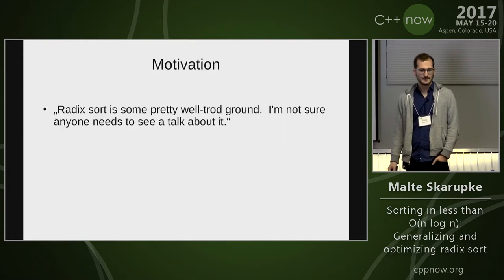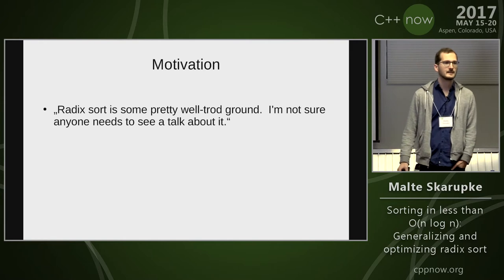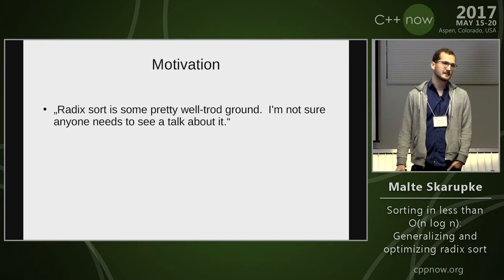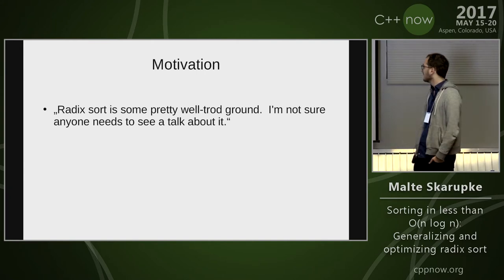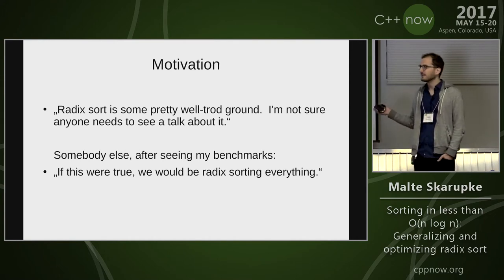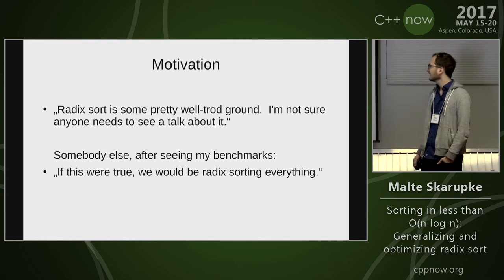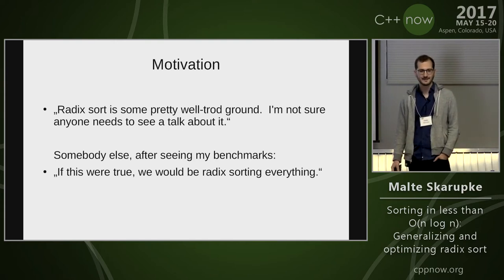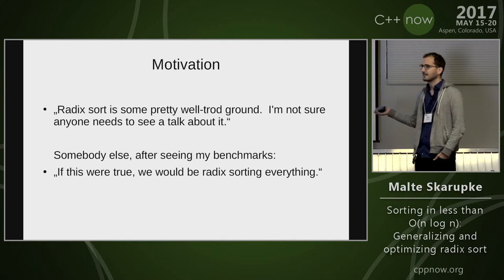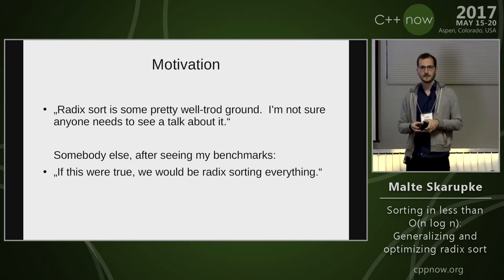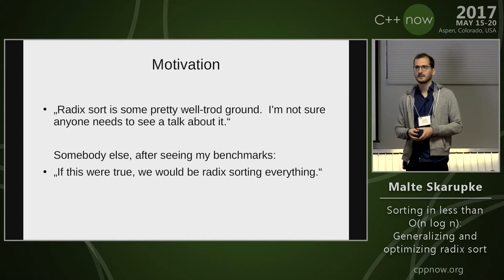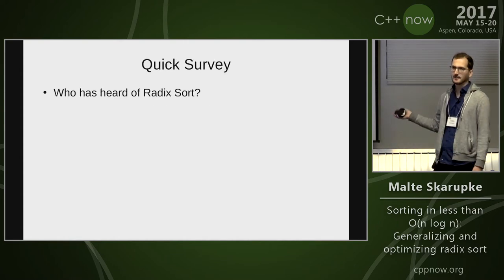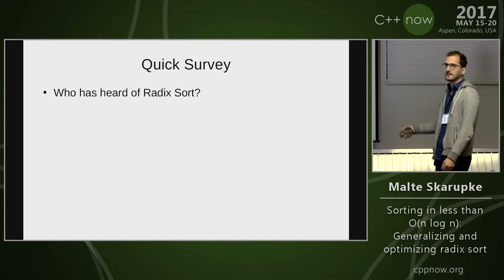Comparison-based sorting cannot be faster than N log N—that is true. But when I showed my benchmarks to one of my coworkers, he said, 'If these benchmarks were true, we would be radix sorting everything.' He was the most experienced guy at my company and just couldn't believe it. The benchmarks are true, and I think we will be radix sorting much more in the future—as prevalent or more prevalent than comparison-based sorting.